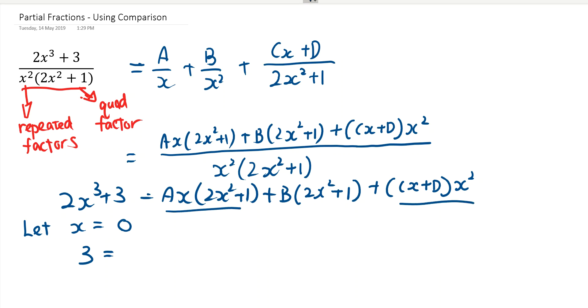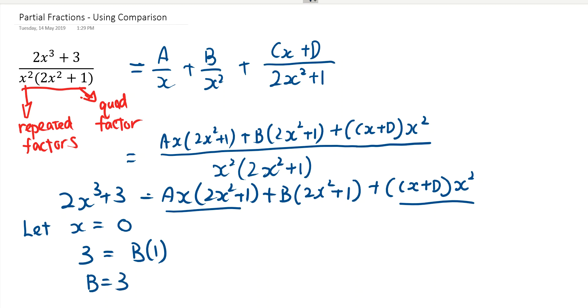this guy will be 0, this guy will be 0. And now I'm left with b bracket 1, which means b equals to 3. We have 1 unknown down, 3 more to go.